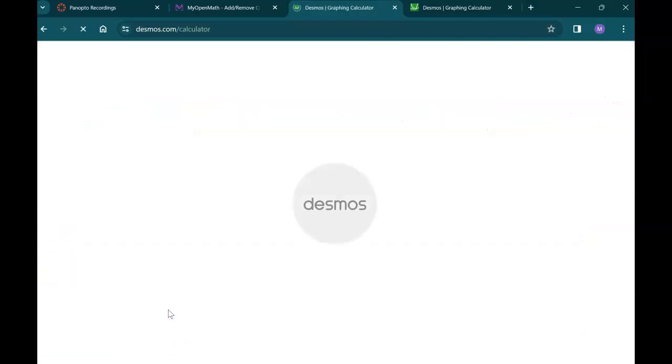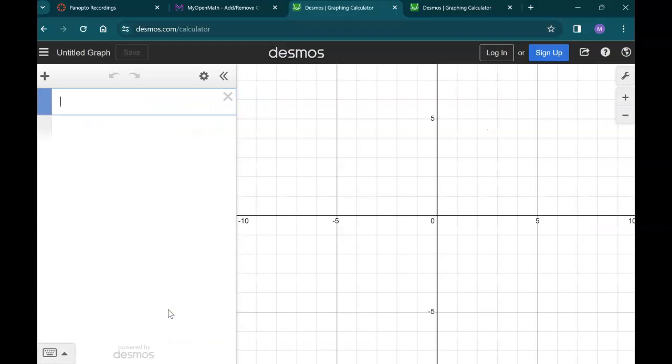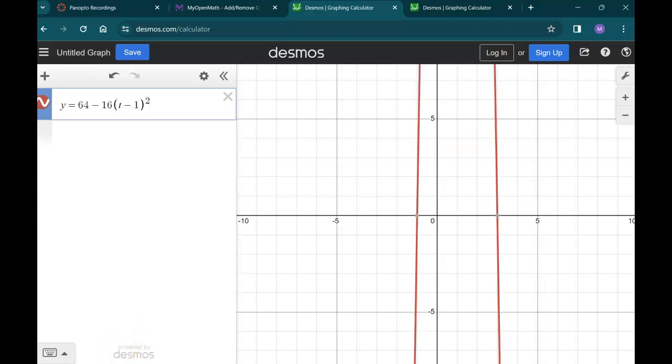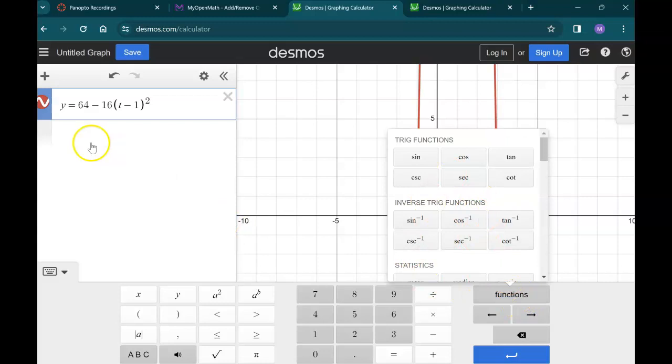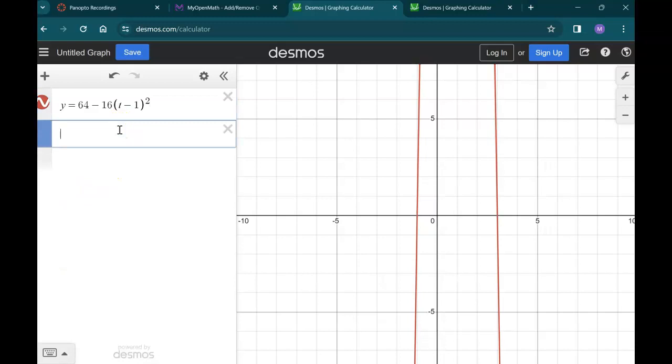We'll be using the graphing calculator. And you can do anything you would do in a scientific calculator here. So let's just start by getting a graph. I'm going to type in y = 64 - 16(t - 1)^2. I'm just typing all that with my keyboard to get the square. I do shift 6 to get the little caret. Let's just get the graph to look like what we started with.